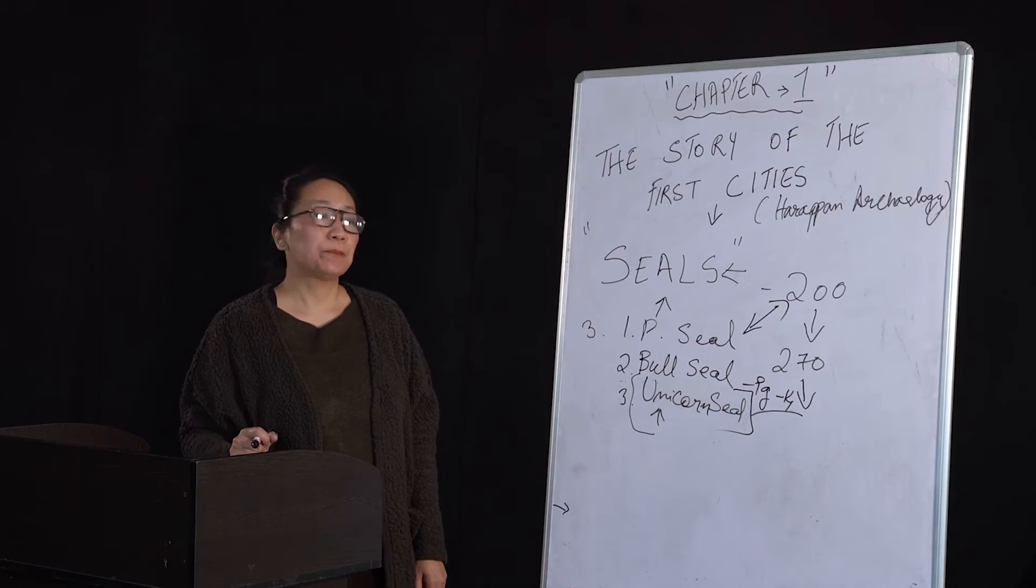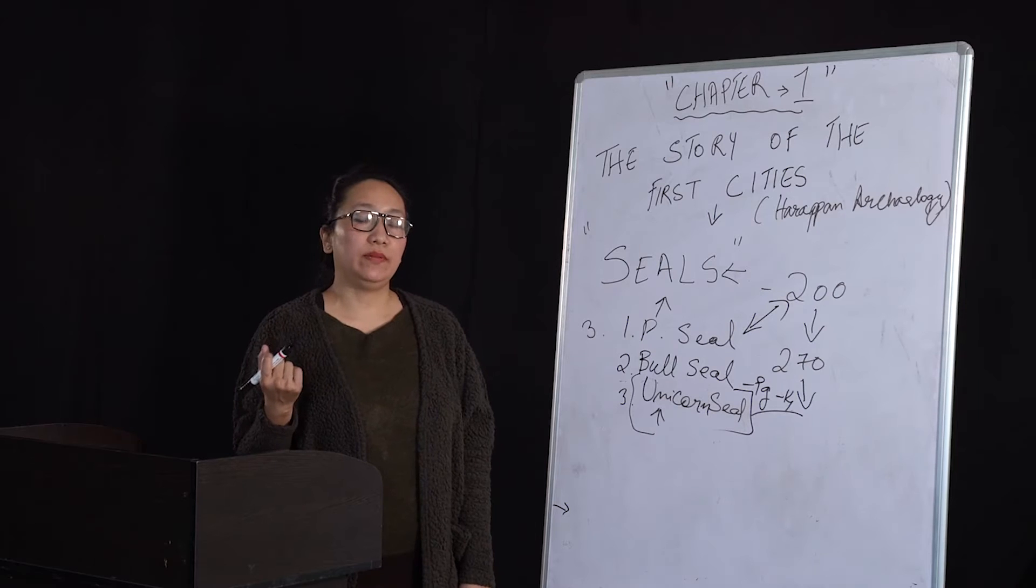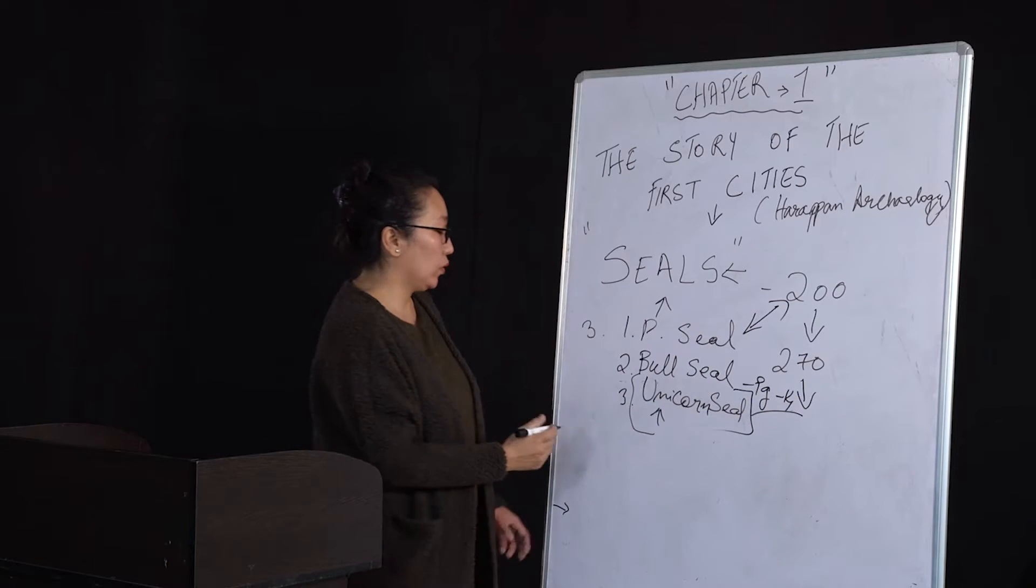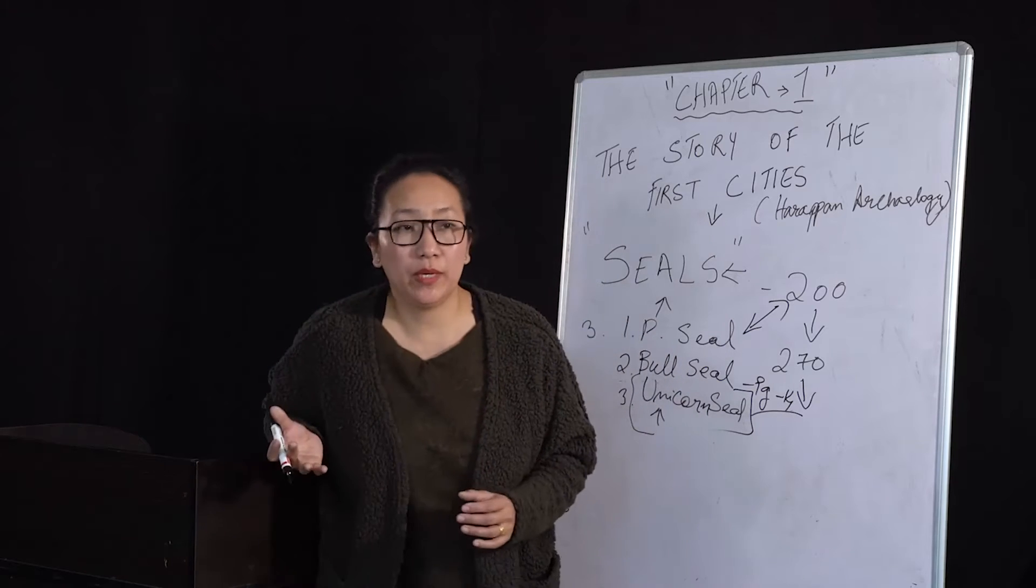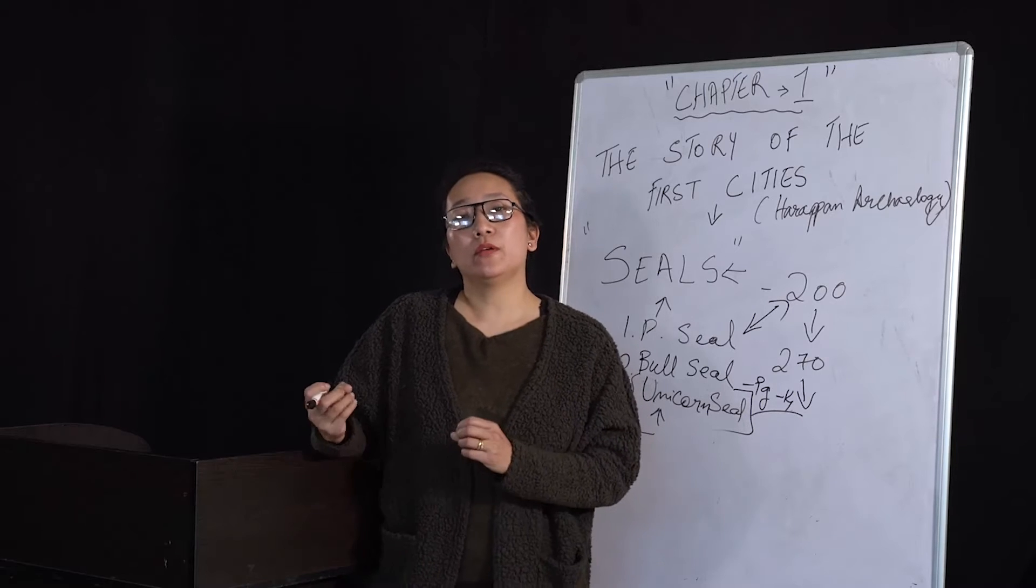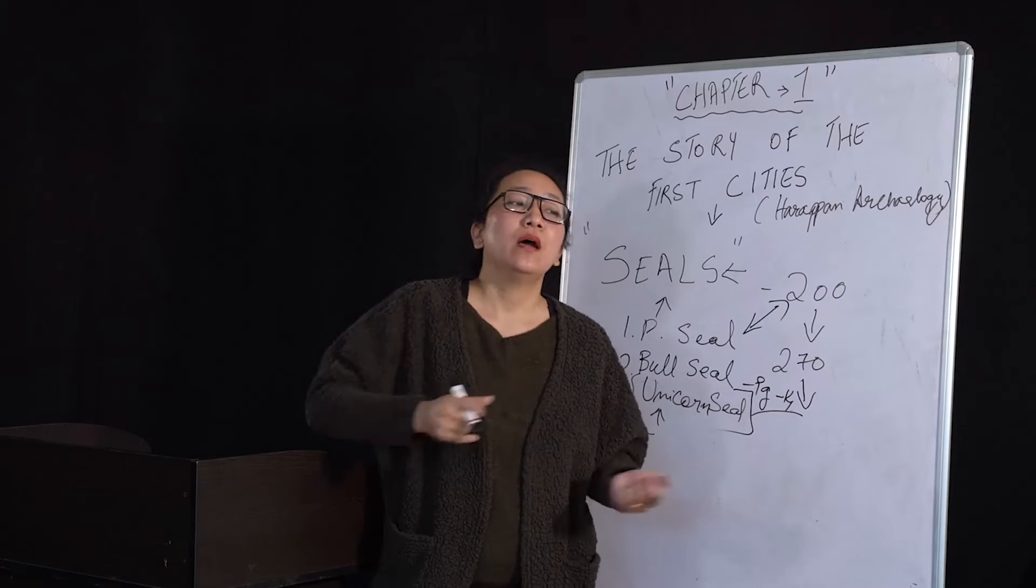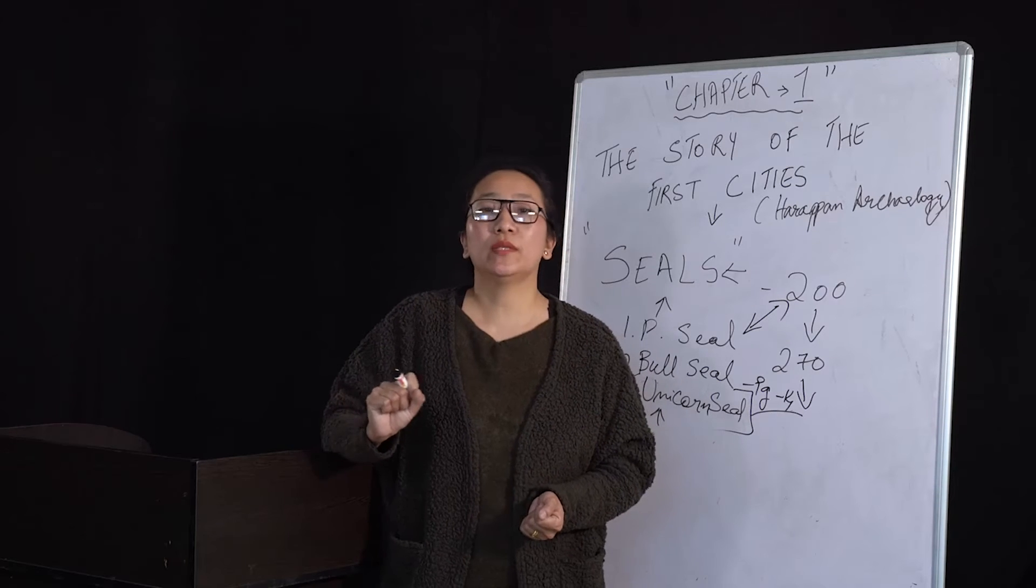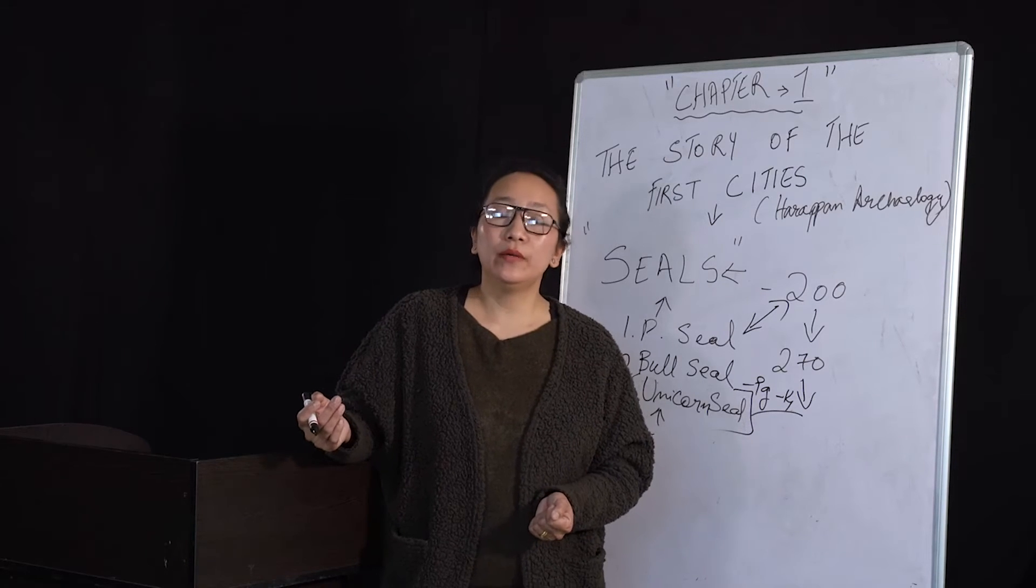Second important factor why this seal is important: we come to know this civilization had contact with the outside world. How do we know? Harappan seals were found in Mesopotamia and Mesopotamian seals were found in the Harappan region. This shows that these two civilizations had contact with each other and an exchange of seals, maybe in the process of trade or business.